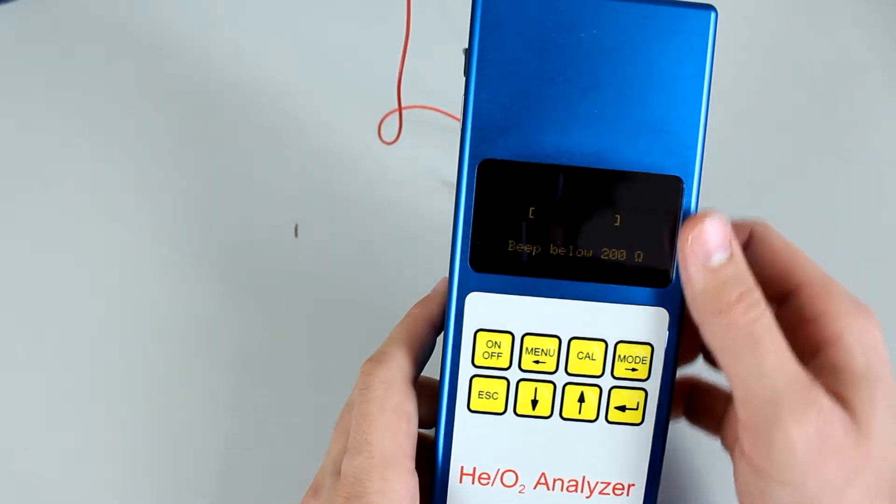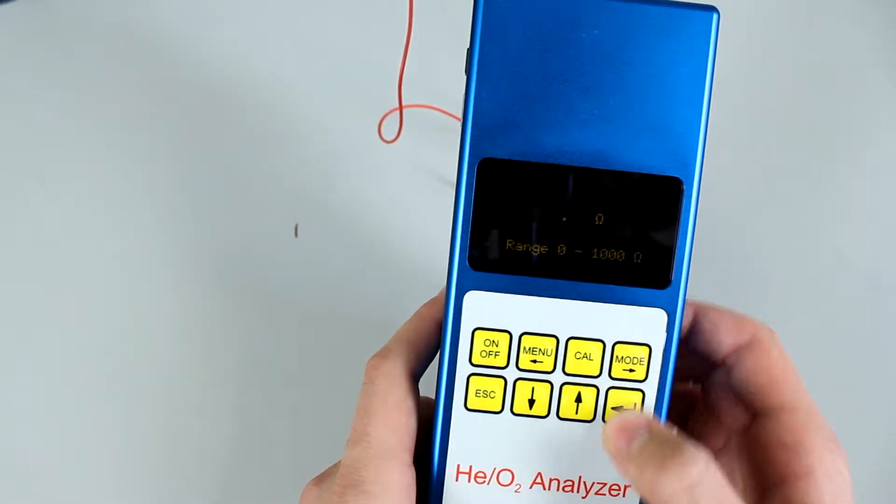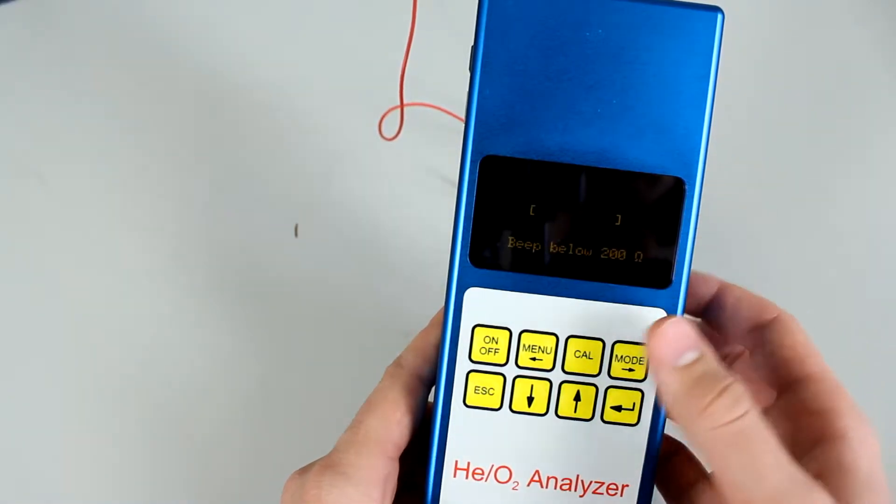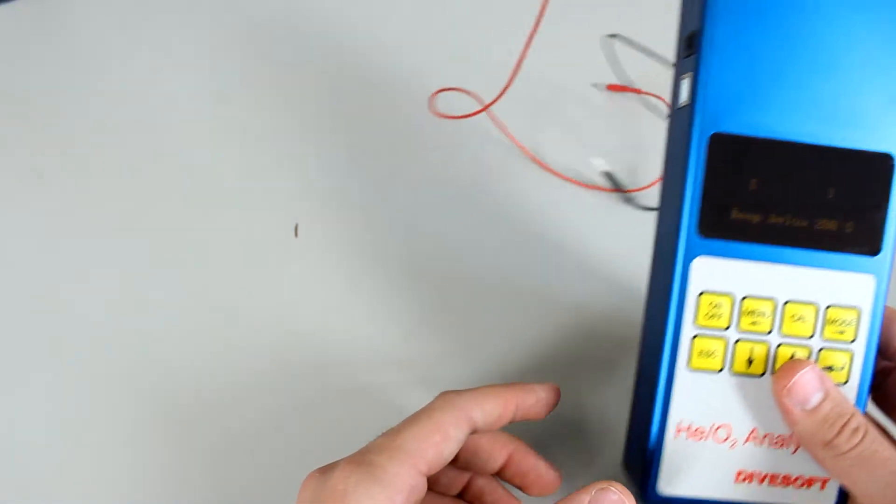There are two modes: the beep mode and the measuring mode. The measuring mode measures between zero and a thousand ohms, and this will beep whenever the resistance is under 200 ohms.